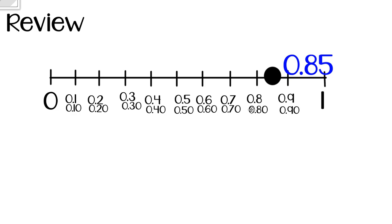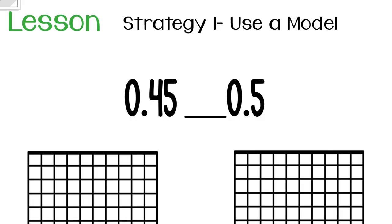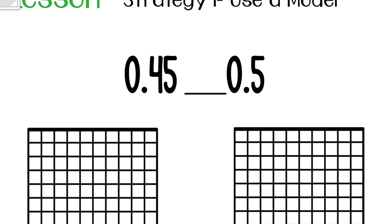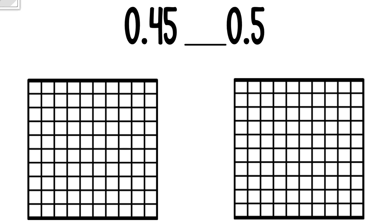Now that we've reviewed, let's learn how to compare two decimals. We have 45 hundredths and 5 tenths. The first strategy is using a model. We shade each model to help us see which is larger. In the first model on the left, I'll color in 45 hundredths: 4 tenths — one, two, three, four — and 5 hundredths: one, two, three, four, five.